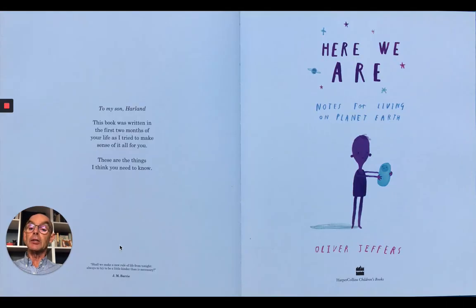There's a little message here to my son Harland. This book was written in the first two months of your life as I tried to make sense of it all for you. These are the things I think you need to know. And right at the bottom is a little message from J.M. Barry who wrote Peter Pan. Shall we make a new rule of life from tonight, always to try to be a little kinder than is necessary? Well that's a good rule isn't it?